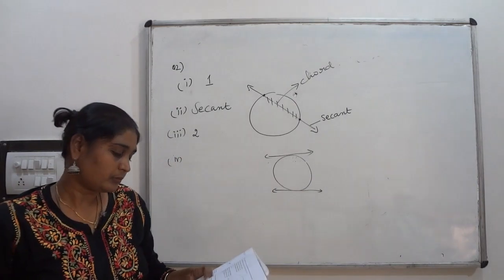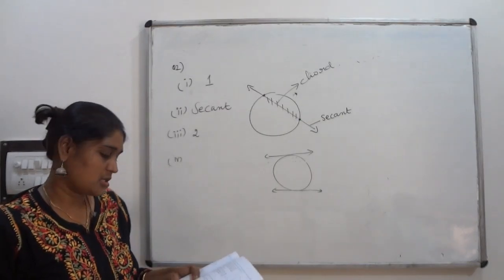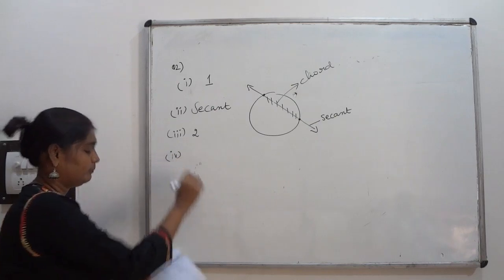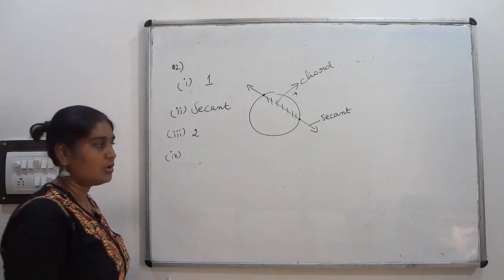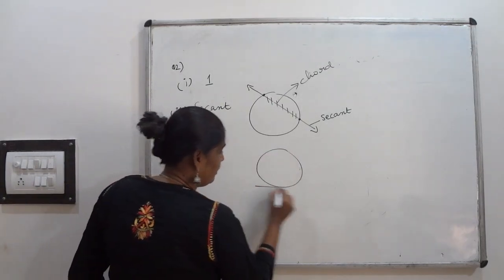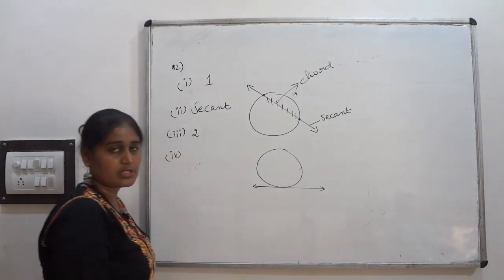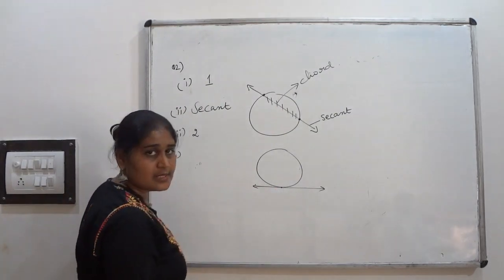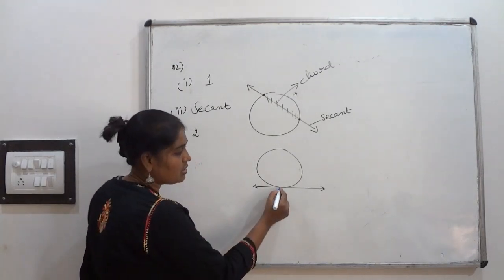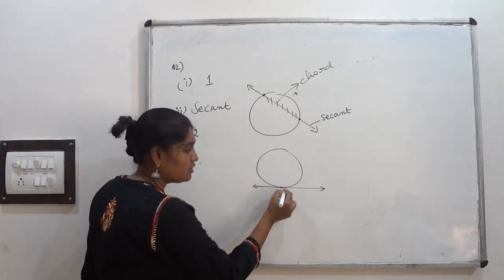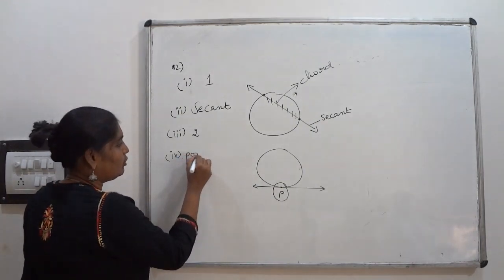Question number 2, fourth part: The common point of a tangent to a circle and the circle is called what? A tangent is a line which intersects a circle at only one point. The common point — here marked as point P — is called the point of contact.